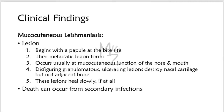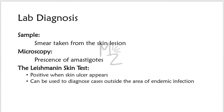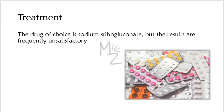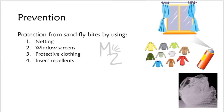For lab diagnosis, a smear is taken from the skin lesion and visualized under the microscope for the presence of amastigotes. The Leishmanin skin test will be positive when the skin ulcer appears at the bite site. The drug of choice for treatment is sodium stibogluconate, but results are frequently unsatisfactory. Prevention from sand fly bites includes using netting, window screens, protective clothing, and insect repellent.